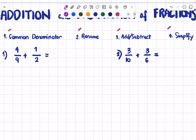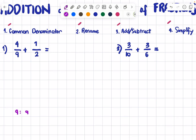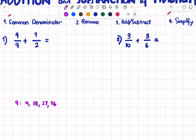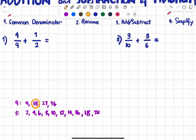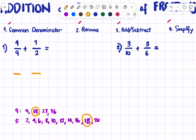There are a lot of common multiples between 9 and 2, so we should use the least common one. Let's list the multiples of 9: 9, 18, 27, 36. Now the multiples of 2: 2, 4, 6, 8, 10, 12, 14, 16, 18, 20. We've already found their common multiple, which is 18. So 18 will be the new denominator, the LCD.